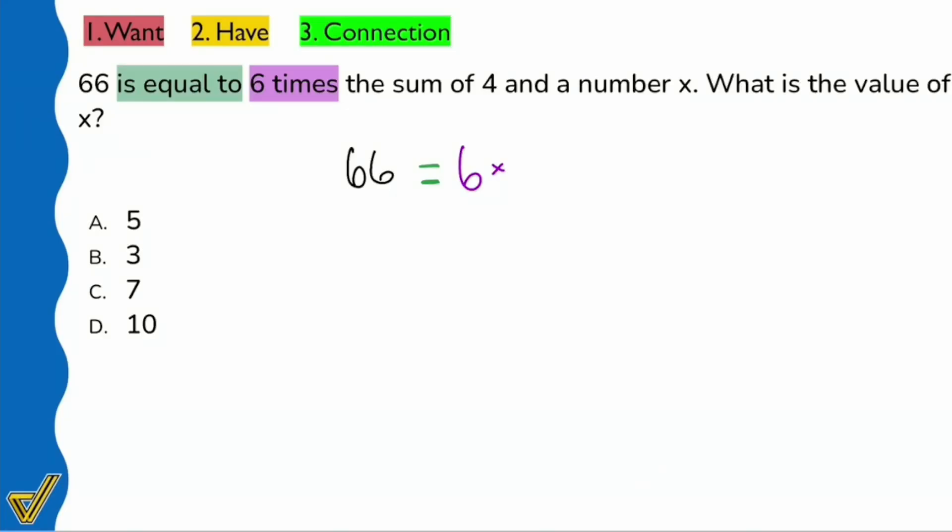The sum - I'm going to put a parentheses so I can safely put my addition, my sum, inside. It says we're adding four and a number x, so I'll do 4 plus x. It is not going to be 6 times 4 plus x. That's the biggest mistake you can make.